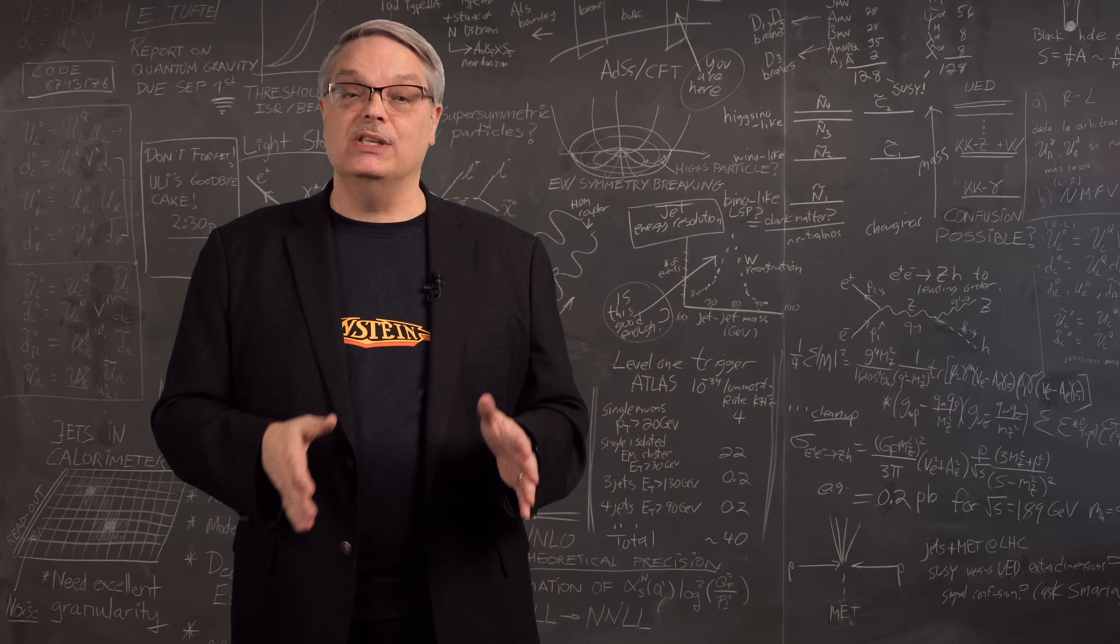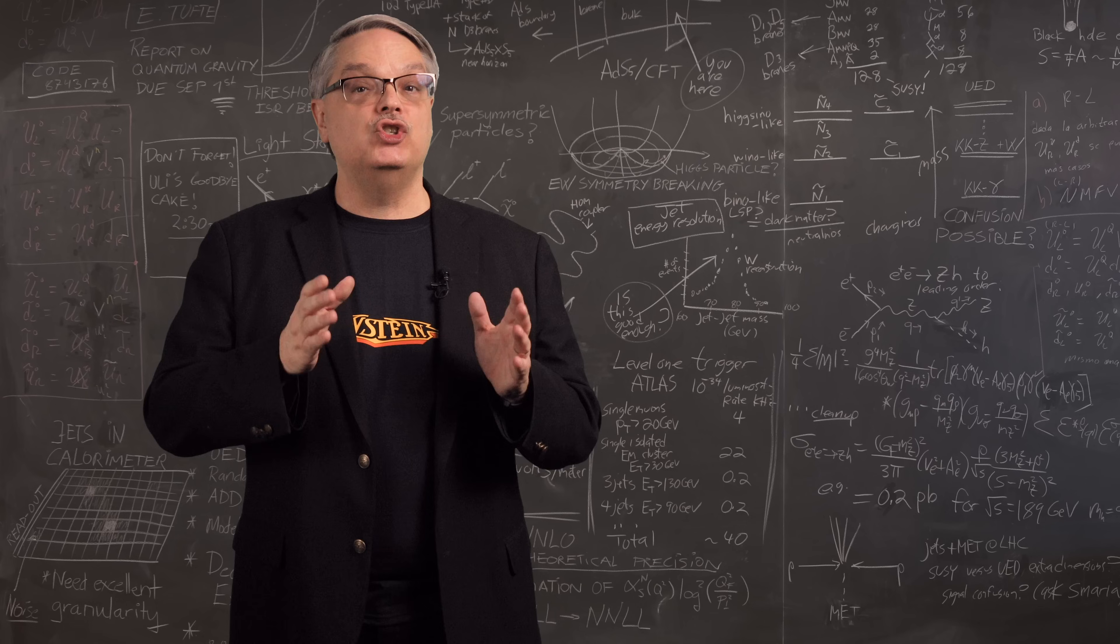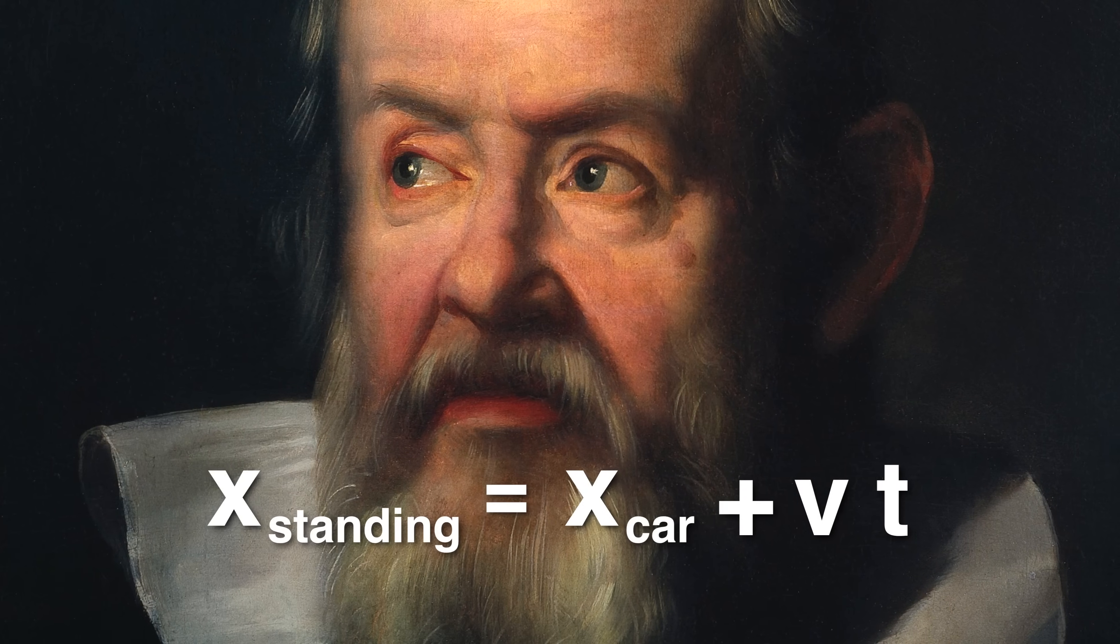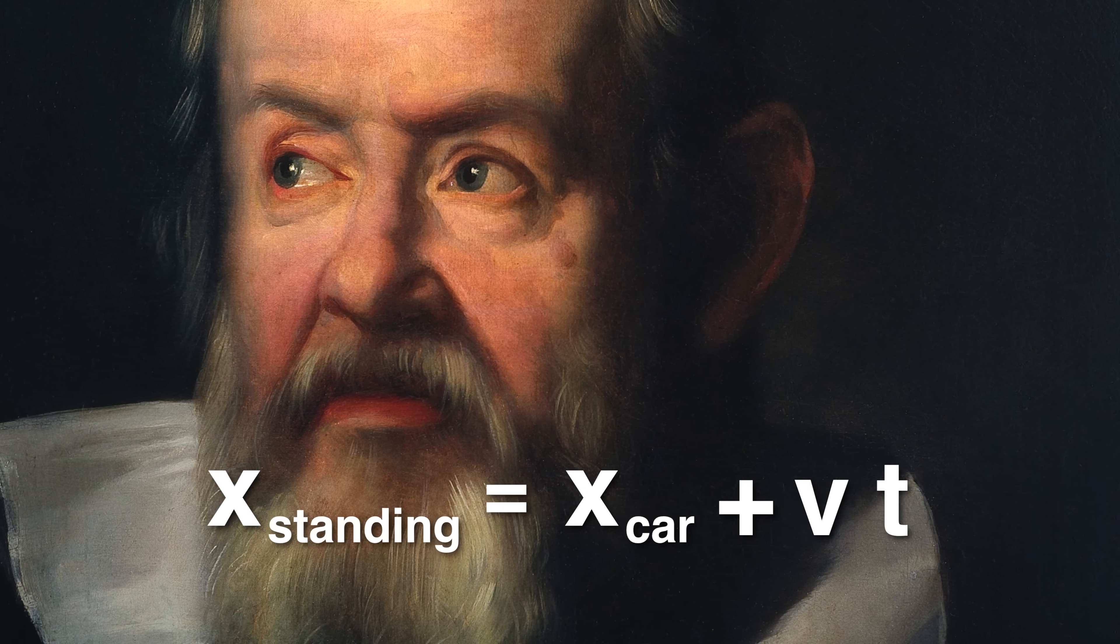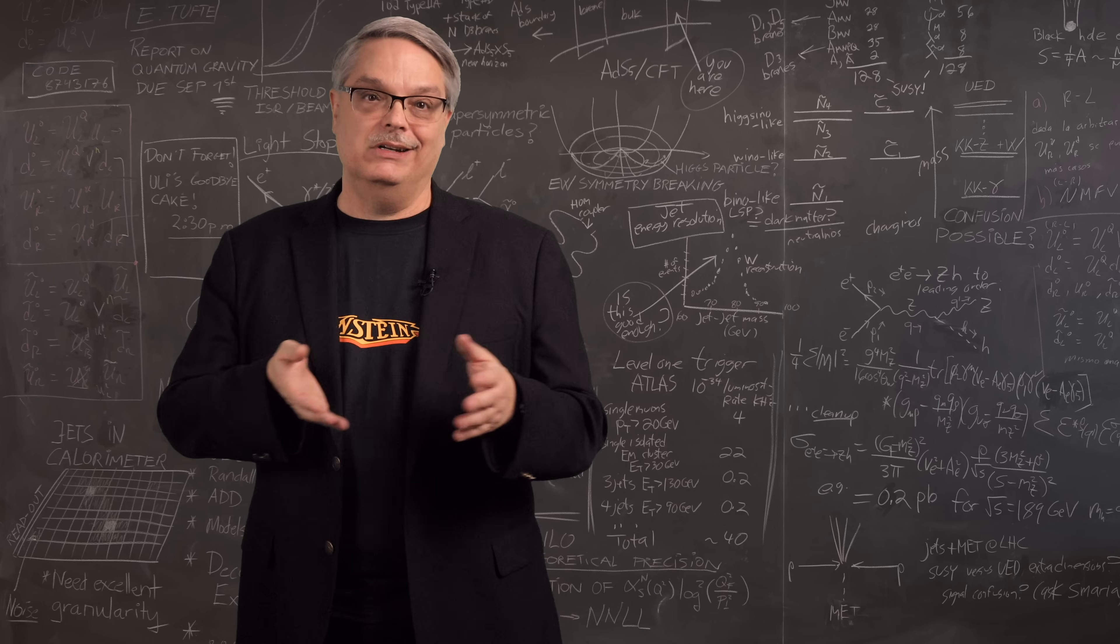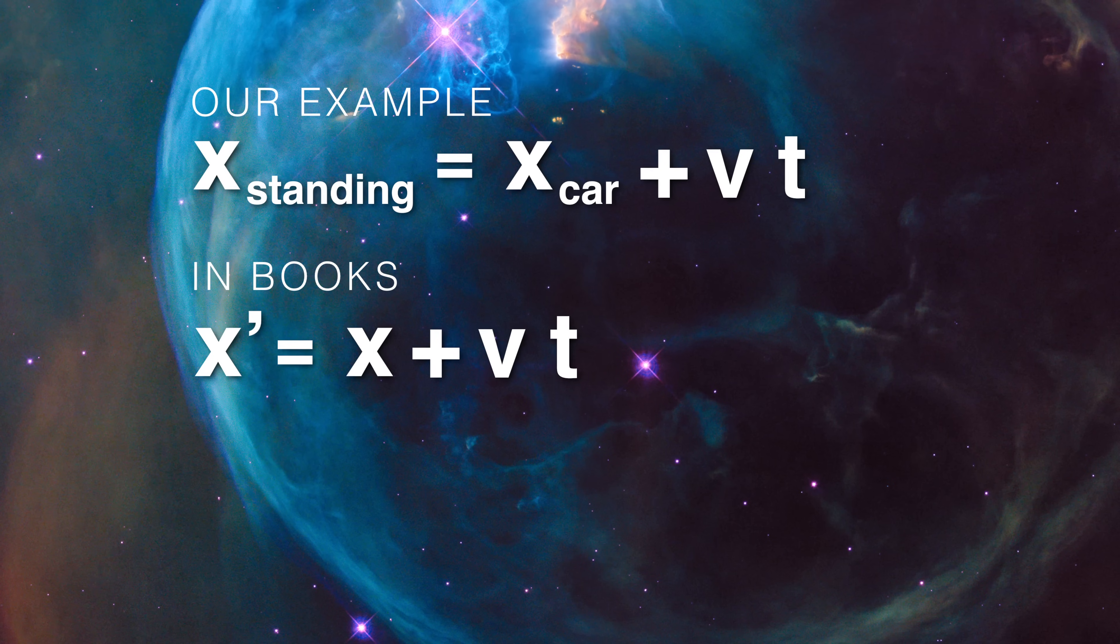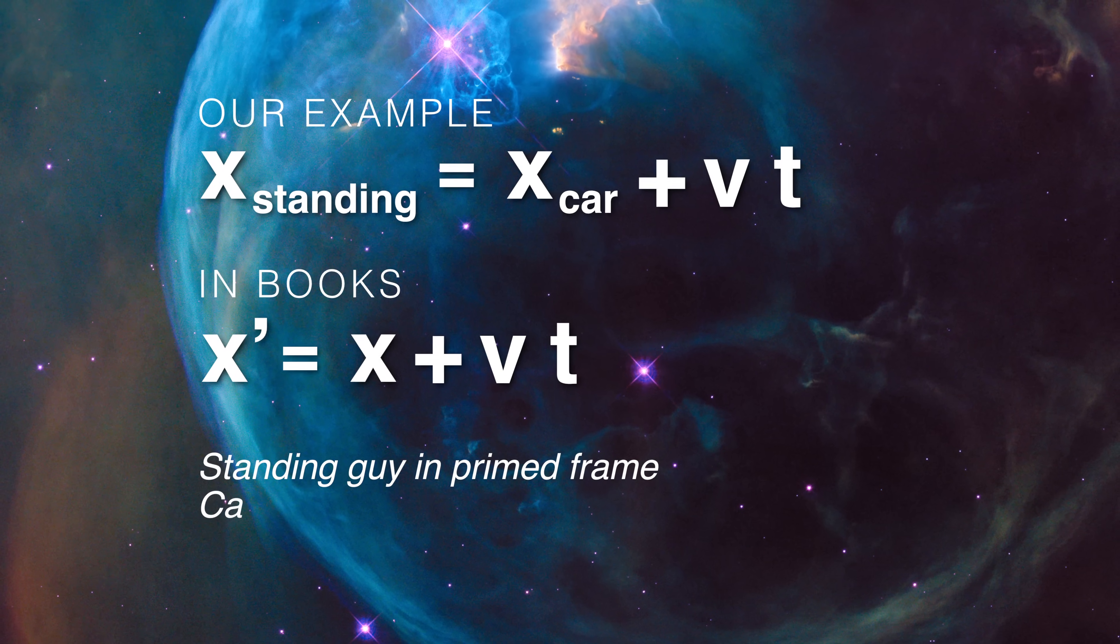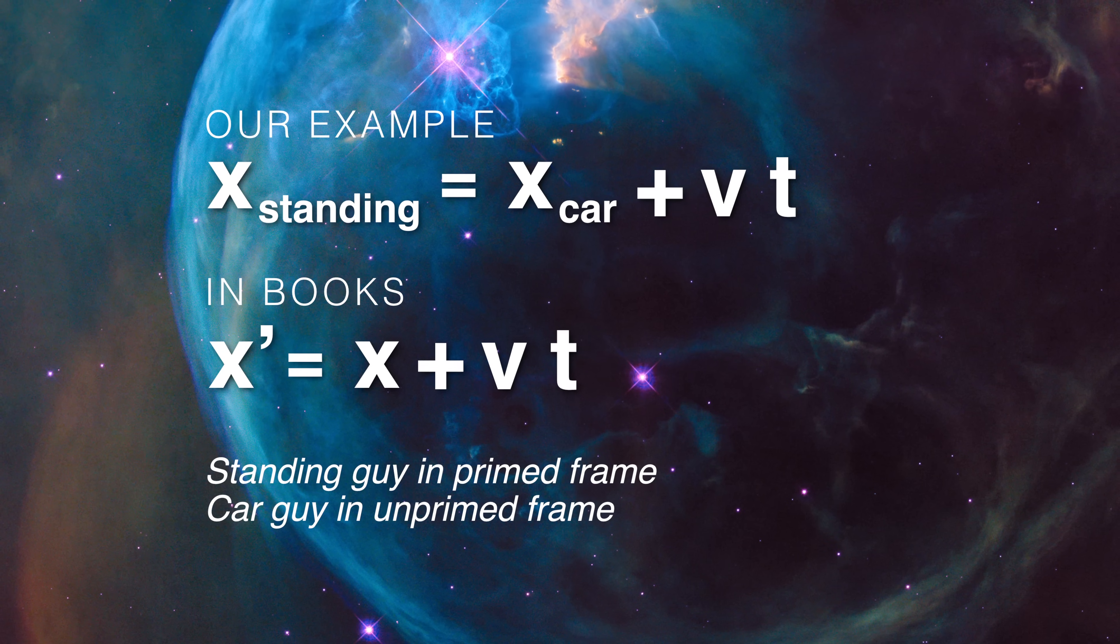If the car guy picks any location that is stationary with respect to him and call that location x subcar, the standing guy will say that this location changes with time that can be written as x substanding equals x subcar plus the car's velocity times time. Now this equation is called a Galilean transform, named after Galileo Galilei. His heyday was like in 1600 or so, so this isn't exactly new. In general, we don't want equations that specify that this is a situation involving a car and a standing person. So textbooks simply call the two points of view, what we call frames, as the primed frame and the unprimed frame. So I'm adding here the equations like you'll see in textbooks. For us, the prime frame is the point of view of the standing guy, while the unprimed frame is the point of view of the car guy. But the idea works for any two frames that are moving with respect to one another.